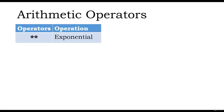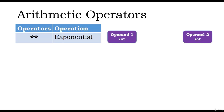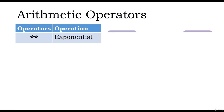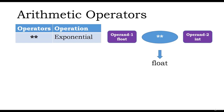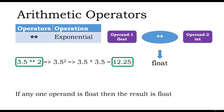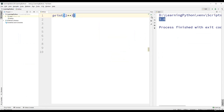Let us look at the exponential operator. Double asterisk is used to denote the exponential operator. Even in the exponential operator, if both the operands are integers, the result is an integer value. For example, 2 exponential 3 evaluates to 2 power 3, which is 2 multiplied by 2 multiplied by 2, giving us 8. If any of the operands is a float, then the result is a float value. For example, 3.5 exponential 2 is 3.5 power 2, which evaluates to 3.5 multiplied by 3.5 and gives us 12.25. Let us look at how the exponential operator works: 2 exponential 3 gives us 8, and since both operands are integers, the result is also an integer. Let us consider 3.5 exponential 2 — we get the result as 12.25. Since one of the operands is a float, the result is also a float value.